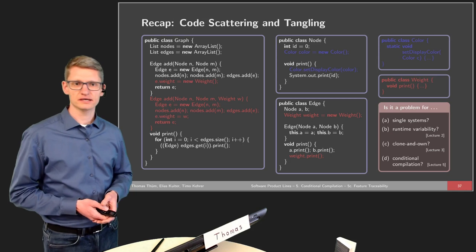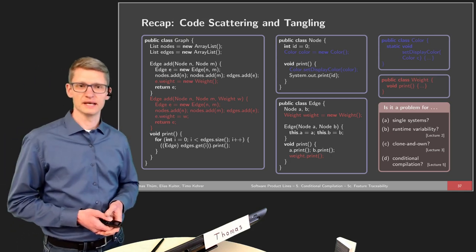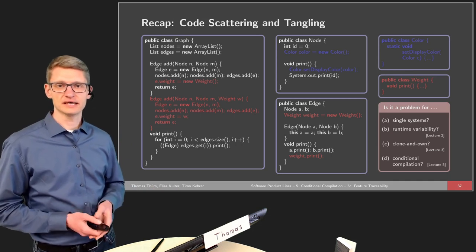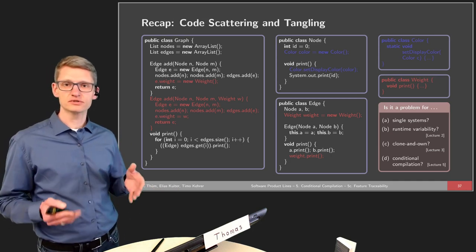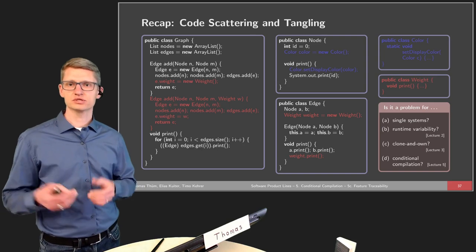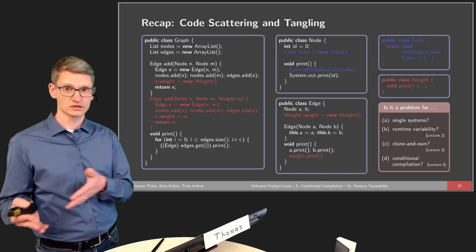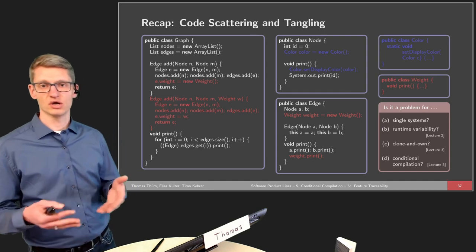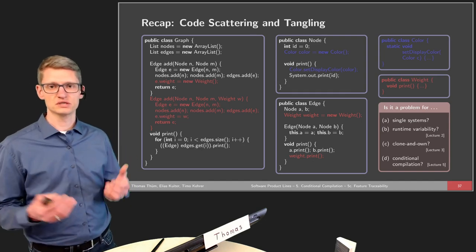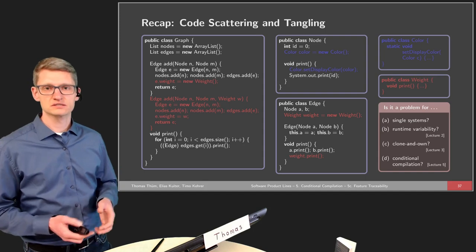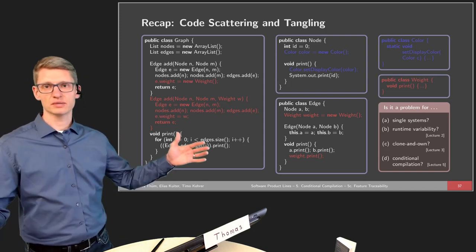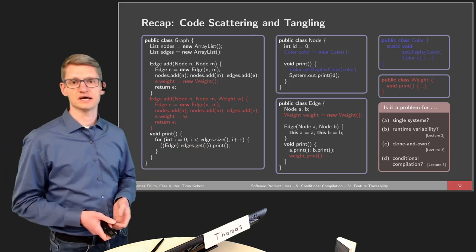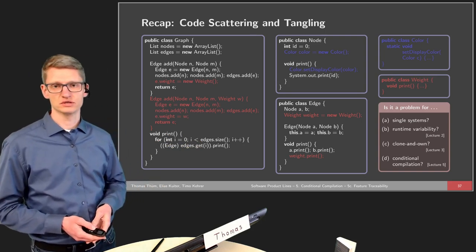Is code scattering and tangling a problem for conditional compilation? Yes, it is. Even though there are certain positions in the code where it is marked whether a code block belongs to a certain feature, or whether an include is needed for a certain feature, it's still spread all over the place — we still have scattering and tangling, with different kinds of features at the same position in the source code.